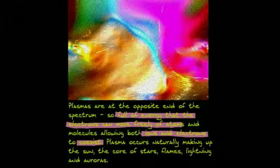Plasmas are full of energy, so full of energy that the electrons can move freely of the atoms. So with the electrons moving freely of the atoms and the molecules, this allows both ions and electrons to coexist. Plasma occurs naturally, making up the sun, core of stars, flames, lightning, and auroras. It also makes up 99% of our universe.